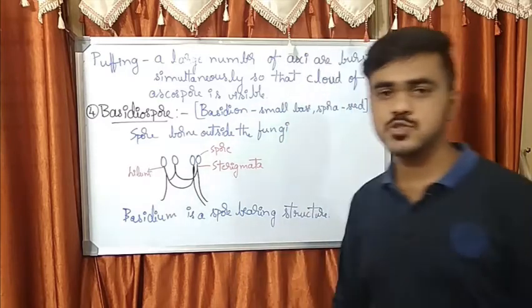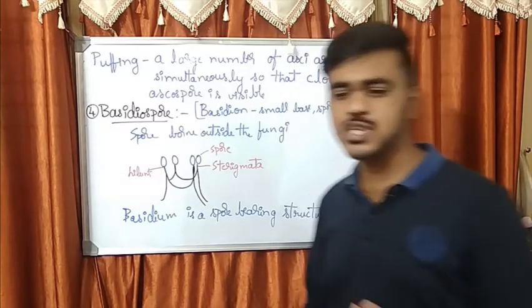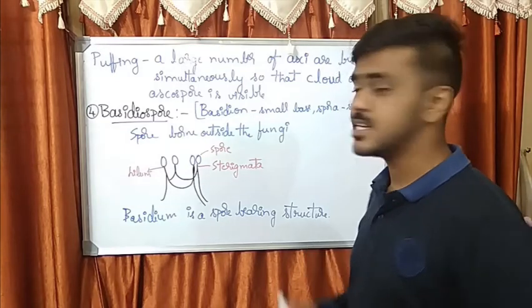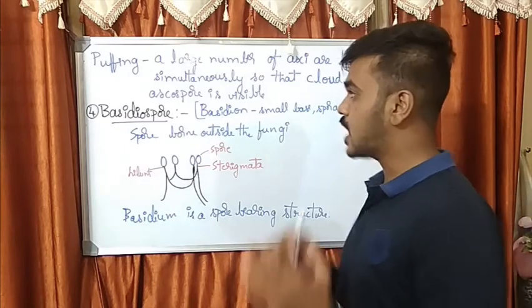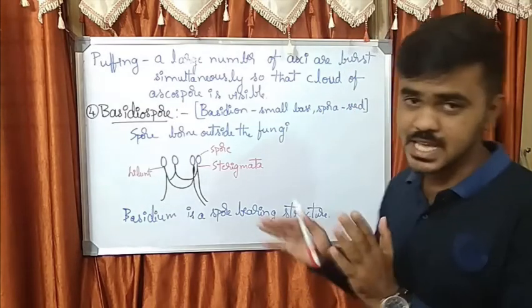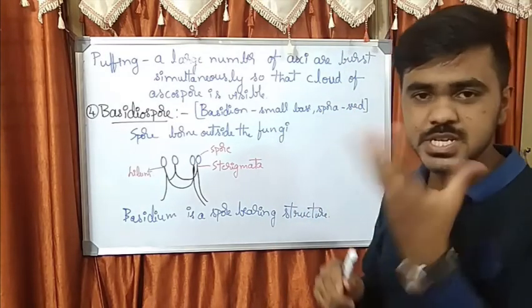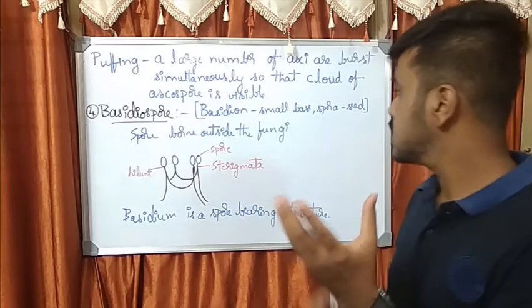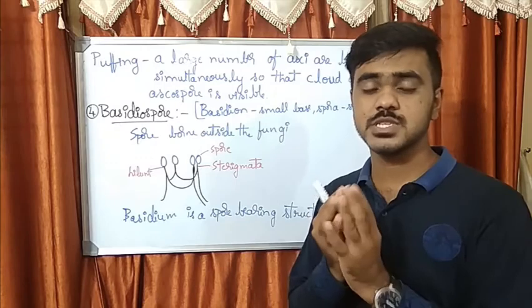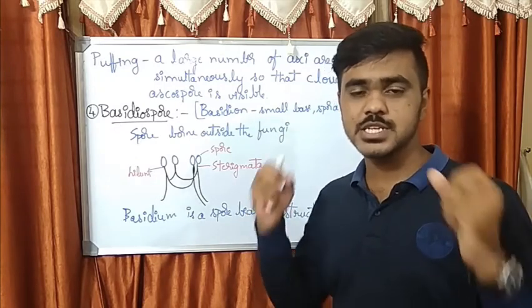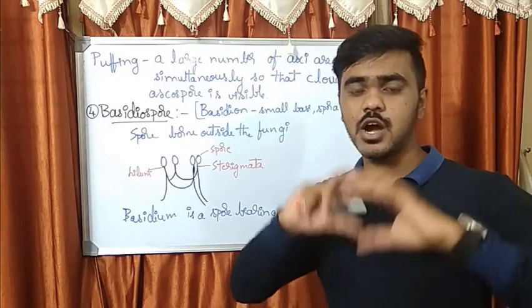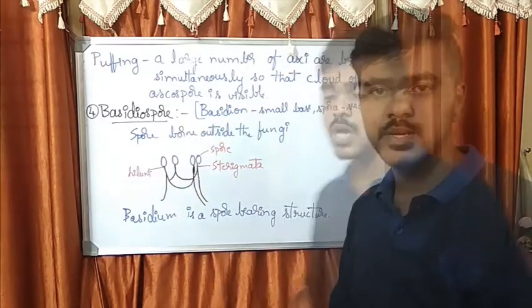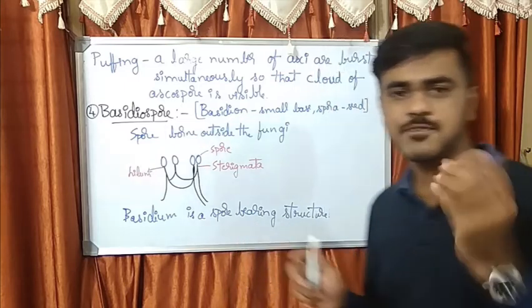In the ascospore, there exists another special condition or character we can say - it is puffing. Puffing means a large number of asci burst simultaneously so that when they all release forcefully at the same time, a cloud of ascospores forms. That is called puffing. But this puffing doesn't occur in the flask fungi.